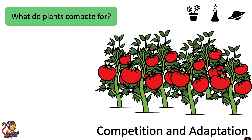In the first part of this video we're going to look at competition. We've got some tomato plants growing here. Can you think of the things these plants will be competing for? The four main things that plants compete for are light, space, water, and minerals. Each individual plant will be competing against the others for those four things.